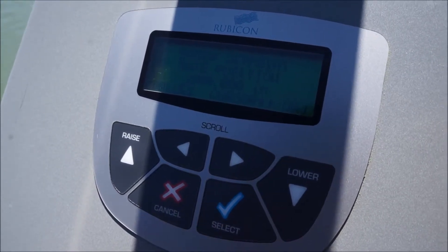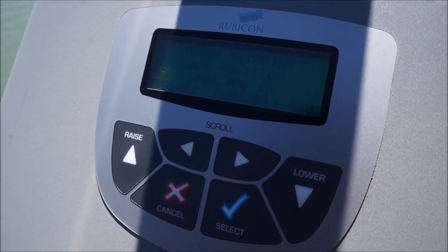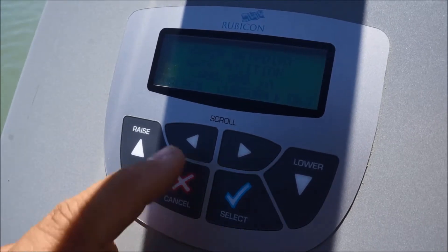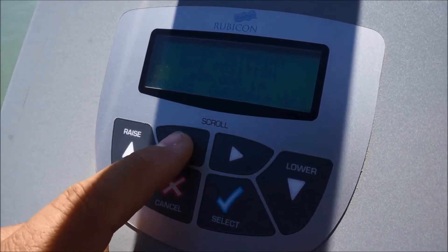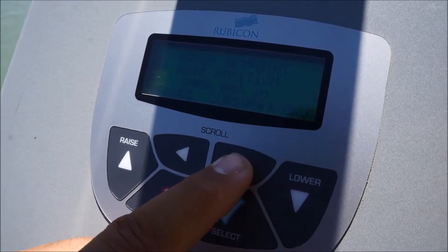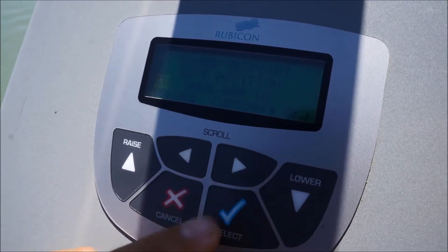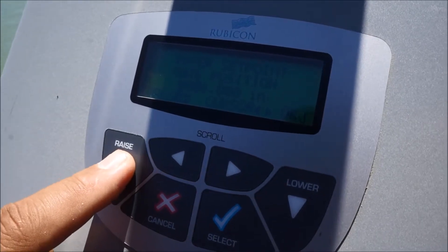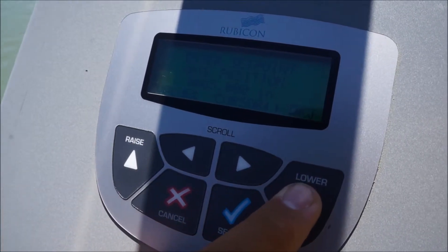Now it's going to prompt you to enter your inches of gate opening. Using the buttons, the left button allows you to go left, the right button allows you to go right. The raise button increases the numbers, the lower button decreases the numbers.